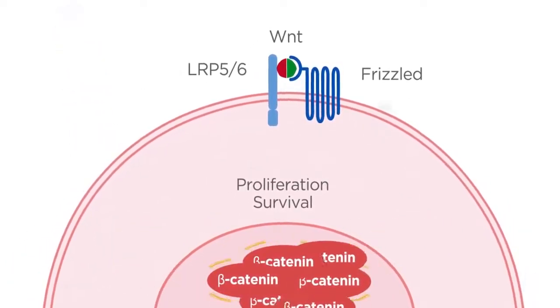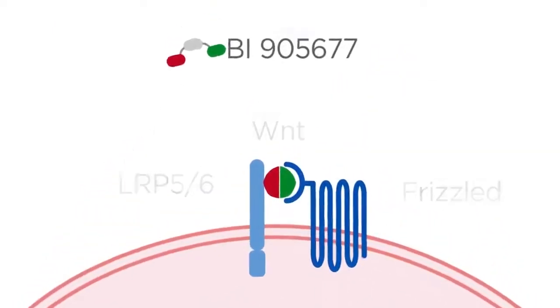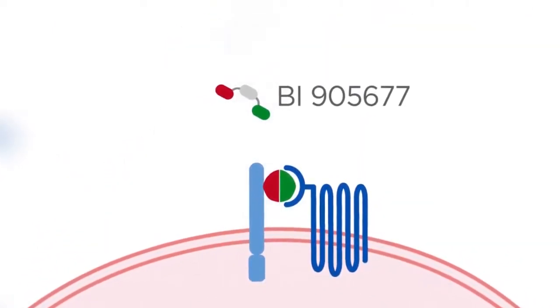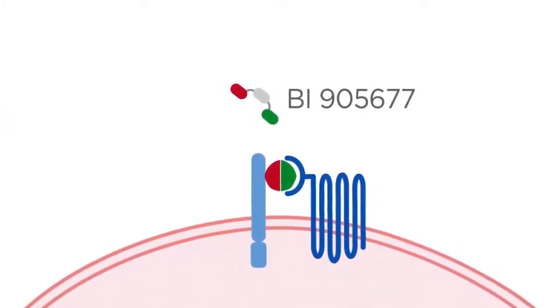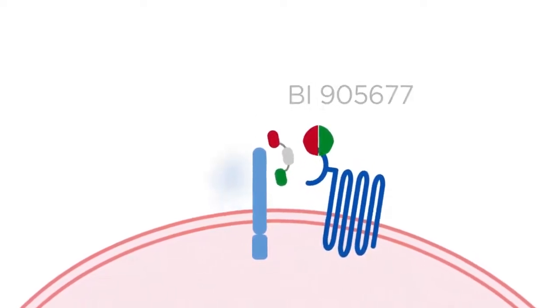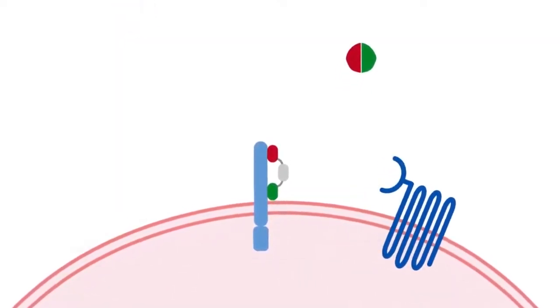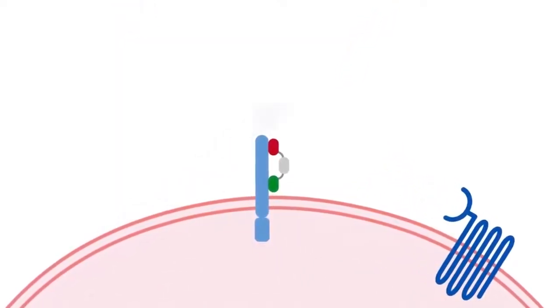By introducing Bi905677, a nanobody targeting LRP5 and 6, the binding of Wnt to LRP5 or 6 is blocked and the trimeric complex breaks up.